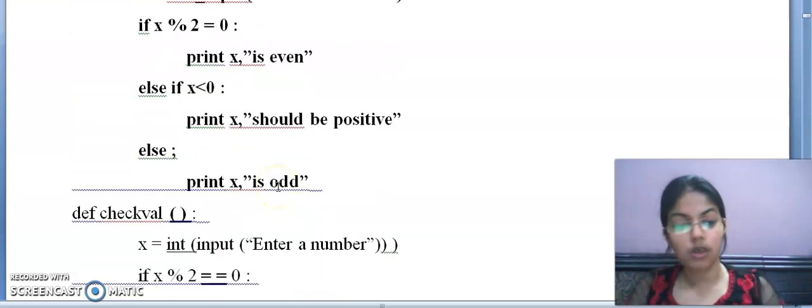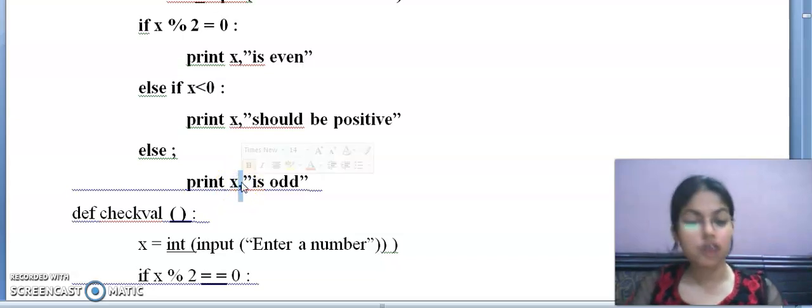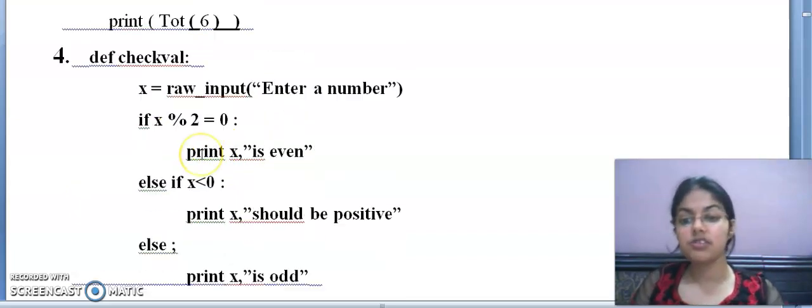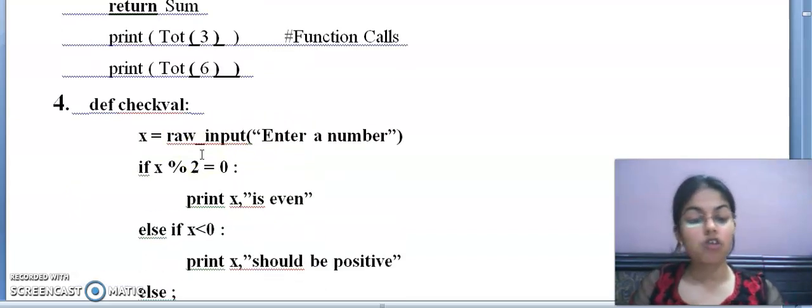And condition x is less than 0, this is correct. Print x should be positive. Here I am adding brackets now. Next else. After this else, what is given to you? Semicolon. But you know, after else what comes? Colon. Print x is odd. Again I am adding brackets here. I hope this concept is clear to you now, how to find the errors and how to correct it.